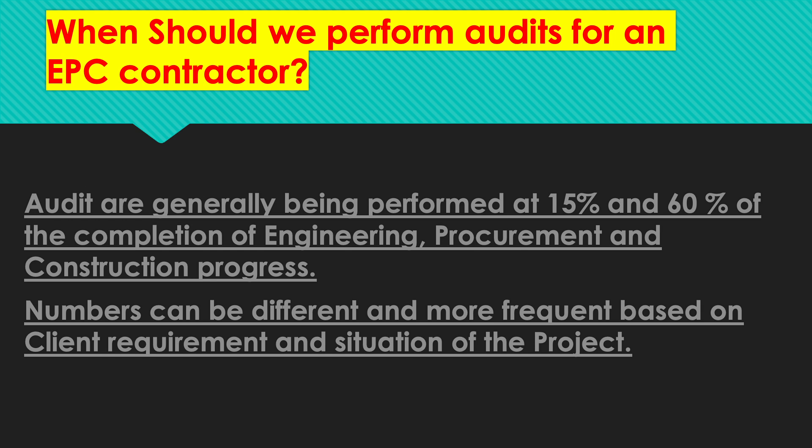That means 15% of engineering, 15% of procurement, and 15% of construction progress, and then 60% of each. There should be a separate audit for each department. Numbers can be different — someone may do it at 20% or 75% — it should be decided by the client and the project contract document at the beginning of the project.